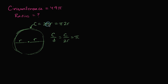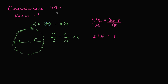So we can go to the original formula, saying that circumference is two pi times r, and substitute in 49 pi for the circumference. So 49 pi is going to be equal to two pi times the radius. We can divide both sides by two pi to solve for r. The two pi's cancel out, and pi divided by pi cancels out, so 49 divided by two is 24.5. If the circumference is 49 pi units, then the radius is going to be 24.5 of those units.